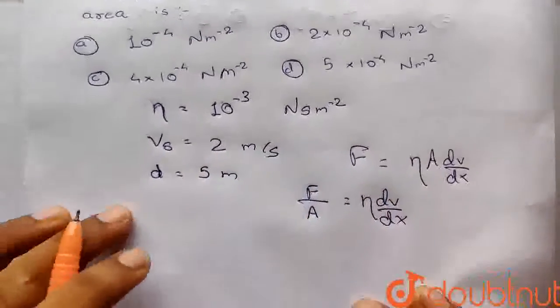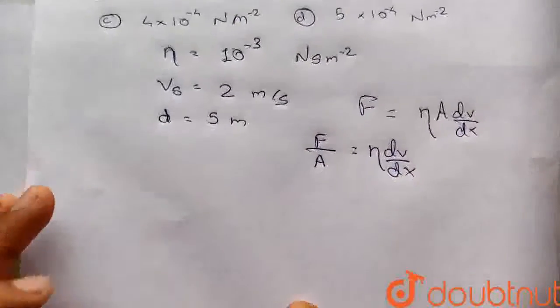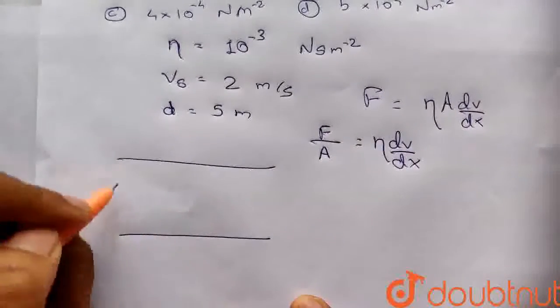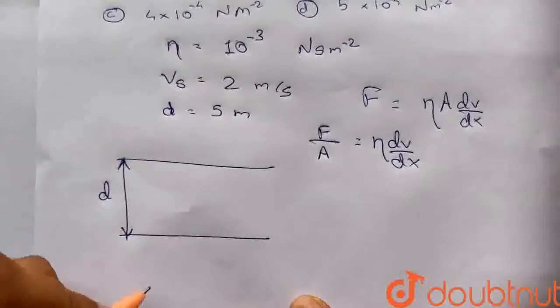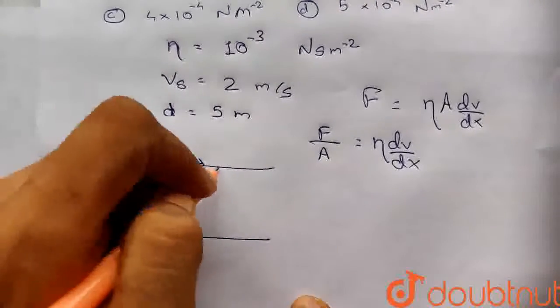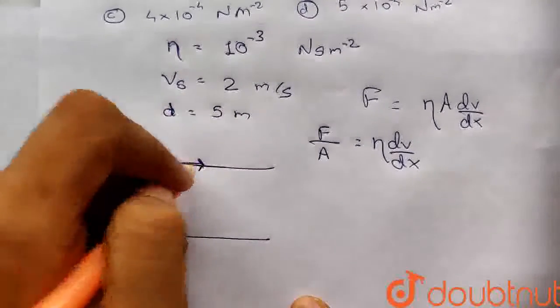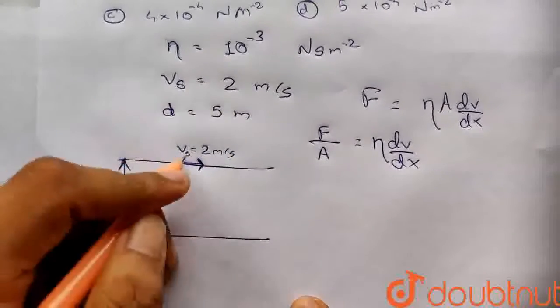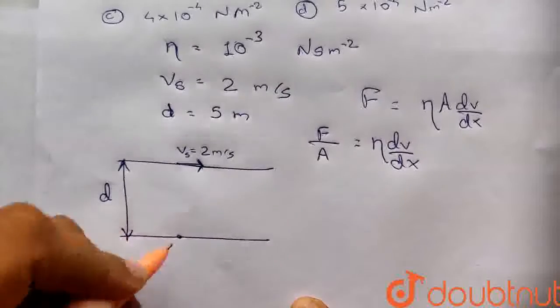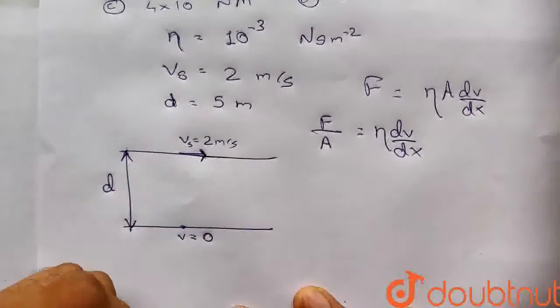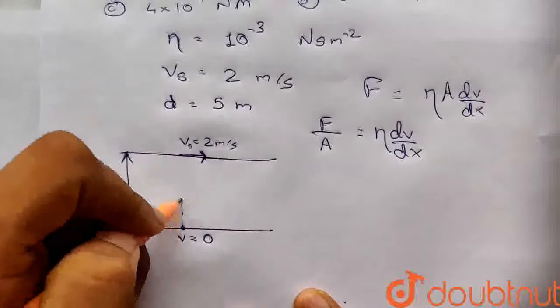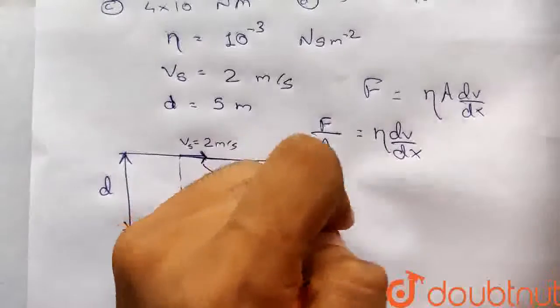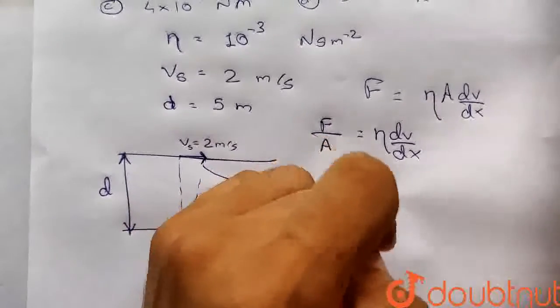Now there is a river like this. This is the bottom, this is the length, and the depth is equal to d. Here the velocity at the surface of the layer is given as 2 meters per second. At the bottom most layer, the velocity is 0. So here we have a velocity gradient.